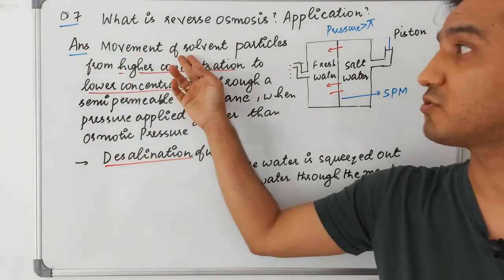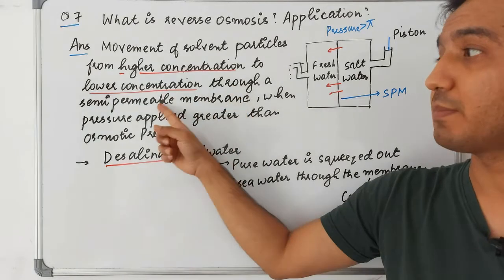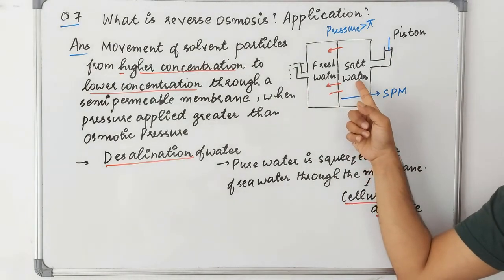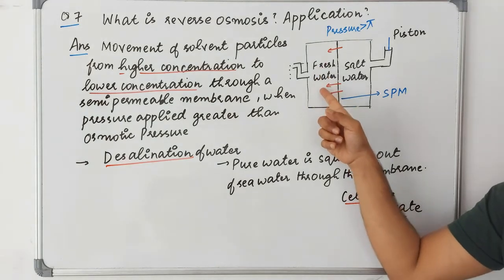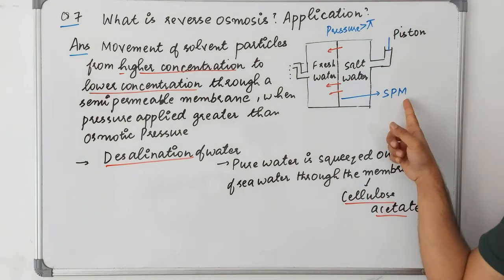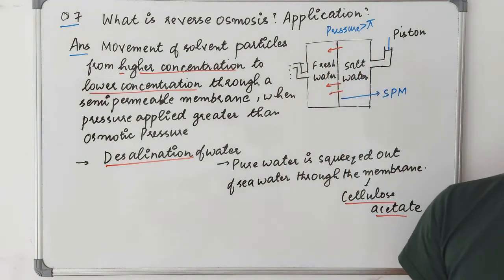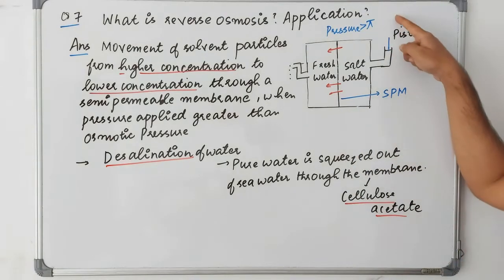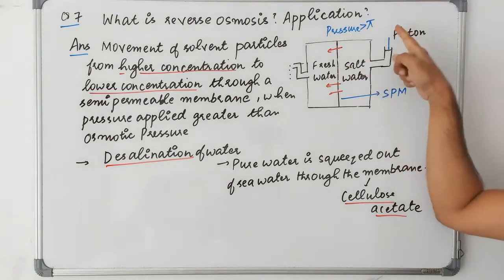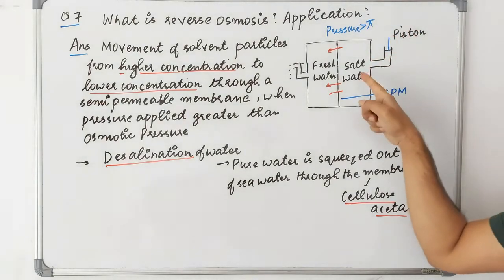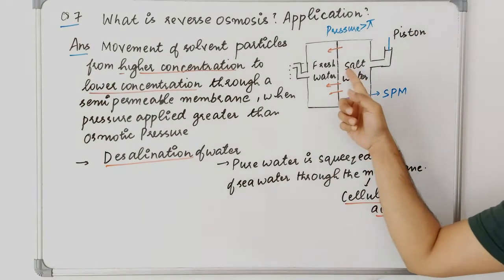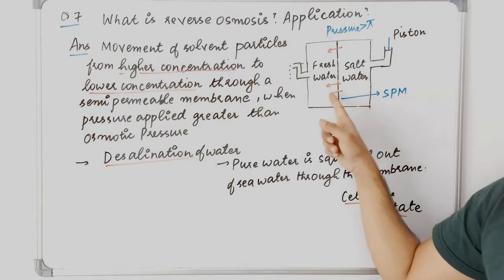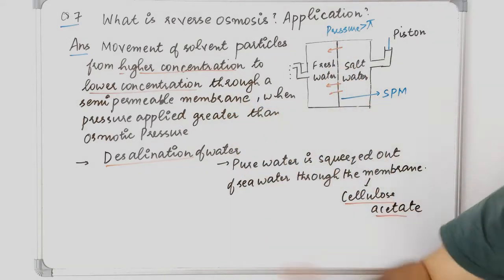Question 7: What is reverse osmosis and its application? Reverse osmosis is the movement of solvent particles from higher concentration to lower concentration through a semi-permeable membrane when the applied pressure is greater than the osmotic pressure. For example, in sea water desalination: normally water moves from fresh water into salt water, but by applying external pressure greater than the osmotic pressure, water moves in the reverse direction — from salt water to fresh water.